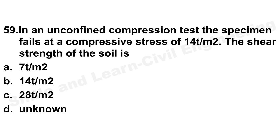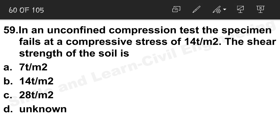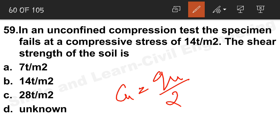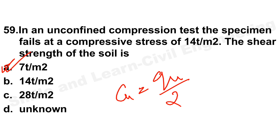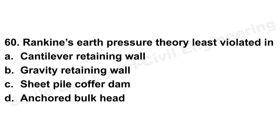Question 59: In an unconfined compressive strength test, the specimen fails at a compressive stress of 14 t/m². The shear strength cu = qu / 2 = 14 / 2 = 7 t/m². Option A is the correct answer.